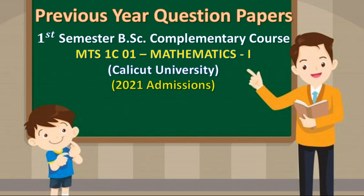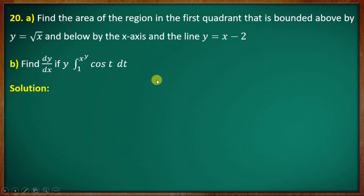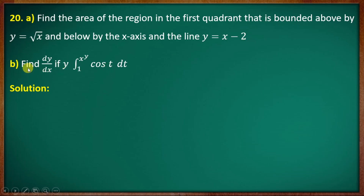First semester B.A.C. complementary course previous question. We have discussed November 2020 Section A and Section B. Now Section C, 20th question: find the area of the region in the first quadrant that is bounded above by y equal to root x, and below by the x-axis and the line y equal to x minus 2.